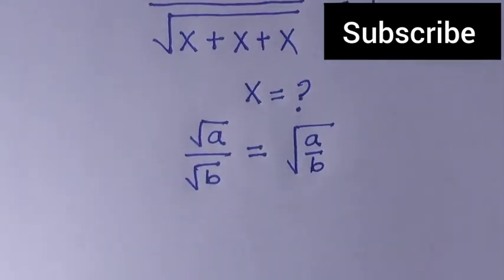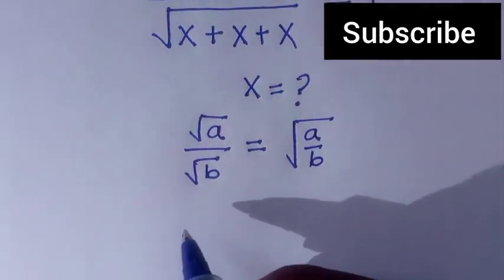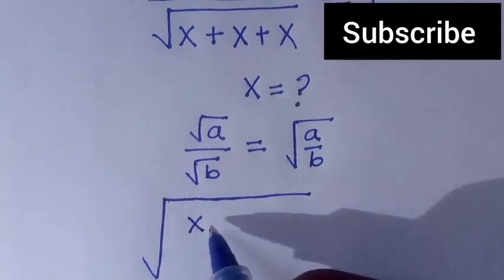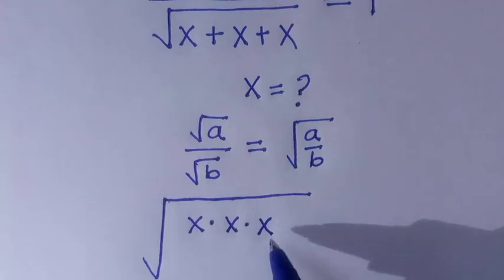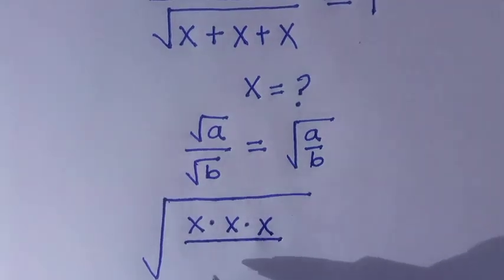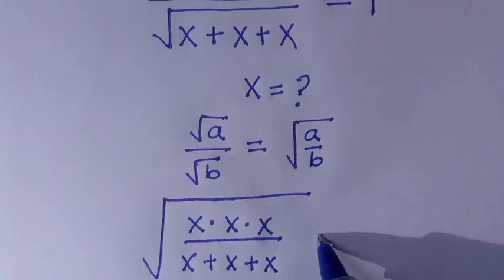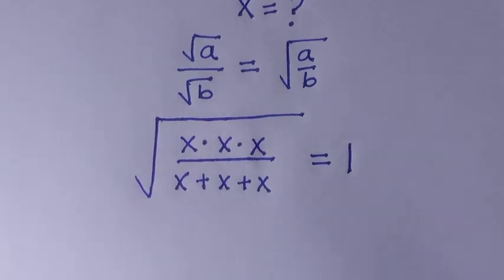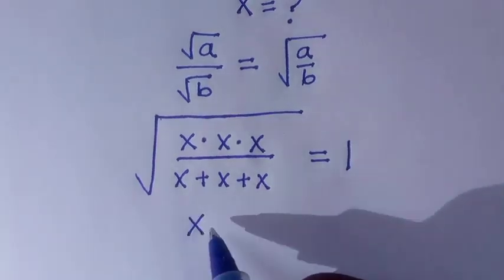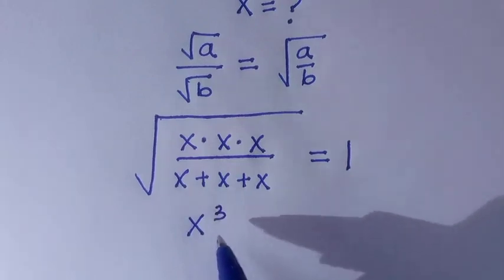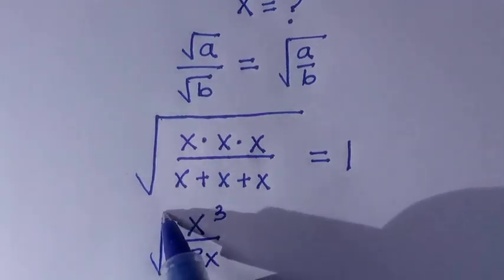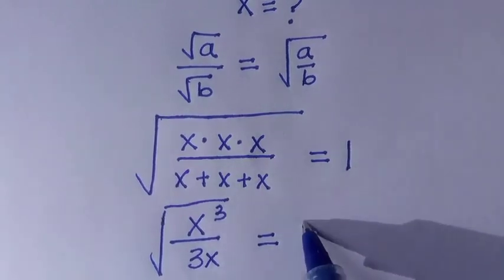When we apply this, here we have square root of x multiplied by x multiplied by x divided by x plus x plus x equals 1. Where this dot represents multiplication, when we multiply all these together, we have x cubed divided by 3x, all in square root equals 1.